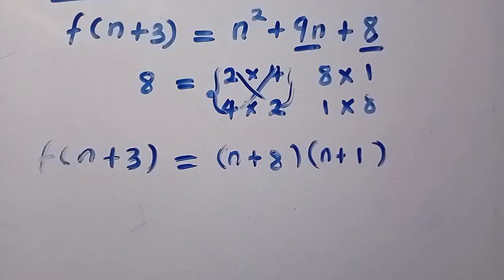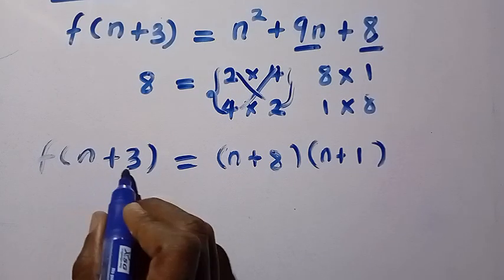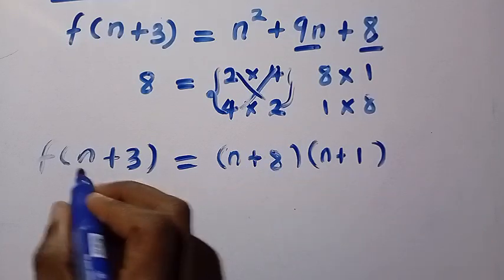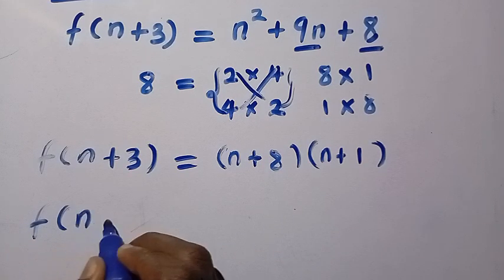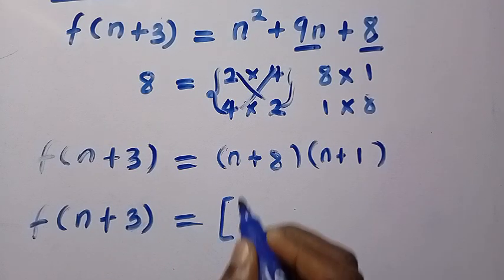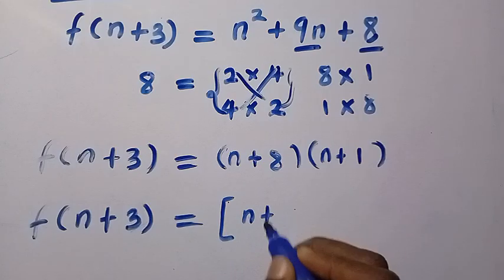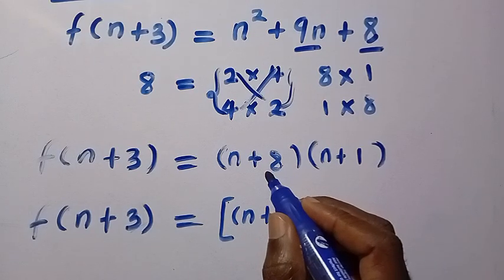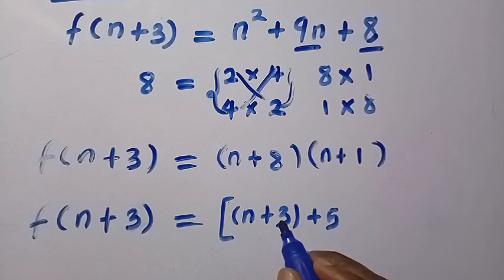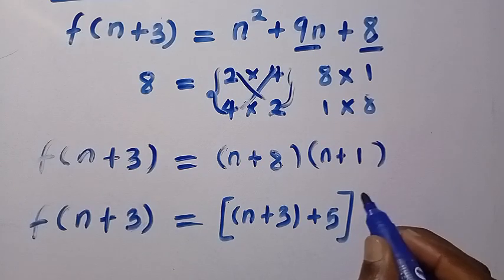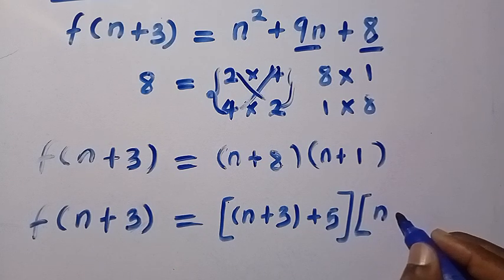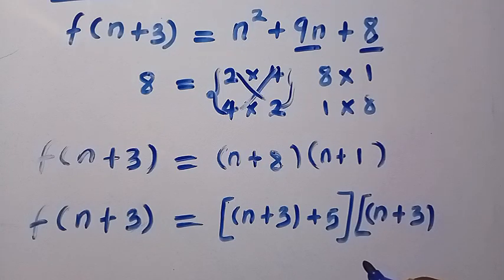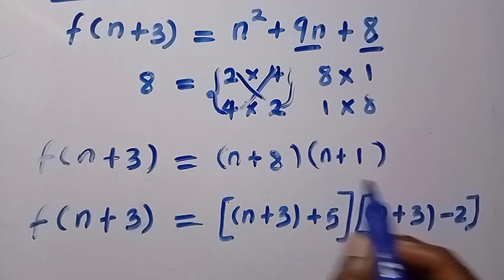The next thing is to manipulate this. We have the domain as n plus 3, and we want to make sure these two factors are also expressed in terms of n plus 3. For n plus 8: we write it as n plus 3 plus 5, since n plus 3 plus 5 gives us n plus 8. For the second factor n plus 1: we write it as n plus 3 minus 2, since n plus 3 minus 2 gives us n plus 1.